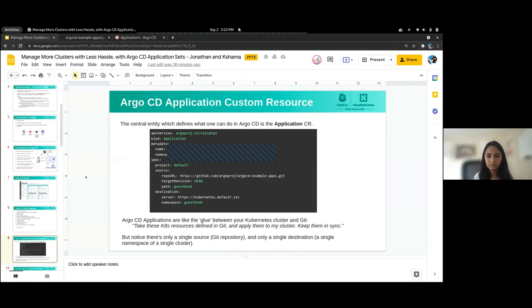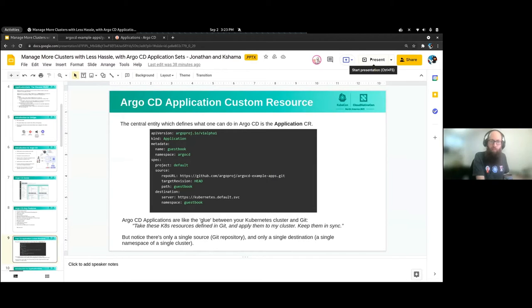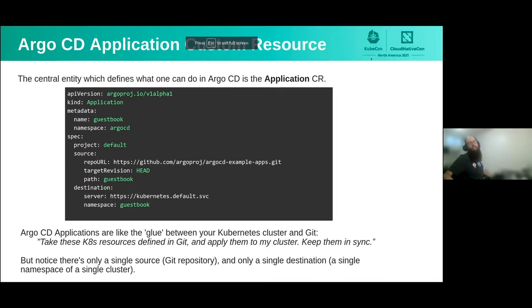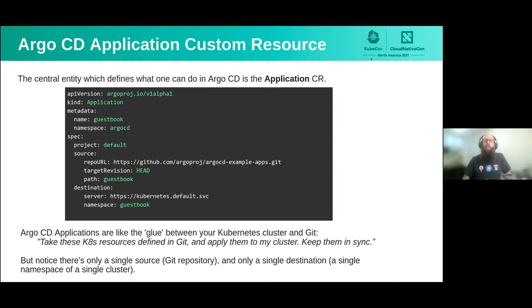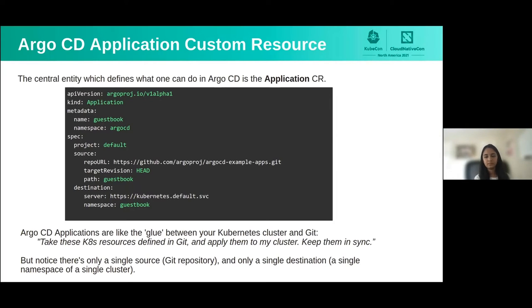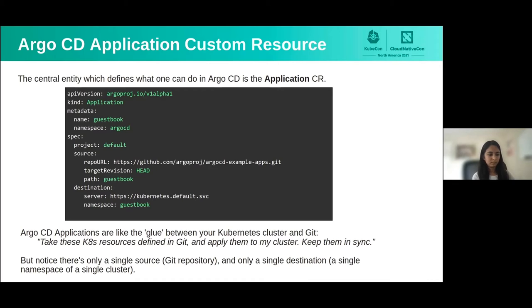Shama showed us a demonstration of the Argo CD web UI. This is the Kubernetes representation of the applications we were seeing in the Argo CD web UI — this is the central custom resource that Argo CD uses to do GitOps.